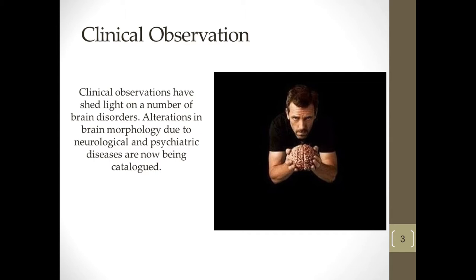Sometimes there have even been lesion studies where we actually do perform surgery, but often as a necessary surgery to solve another issue. We're never going to conduct brain surgery just to see what happens — it's always for some functional reason, like say there's a massive hemorrhage in one area of the brain that needs to be removed. Then we can do clinical observation and learn a bit more about what's happened.